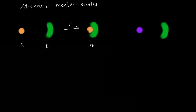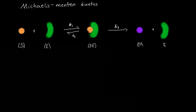The speed at which that occurs is based off of K1. This complex can also fall back apart, and we'll call that K2. But if it goes towards the reaction and makes a product P, that's based off of K3, and then we just get a free enzyme again. The concentrations are represented in brackets, so that represents the concentration of each one of these molecules.